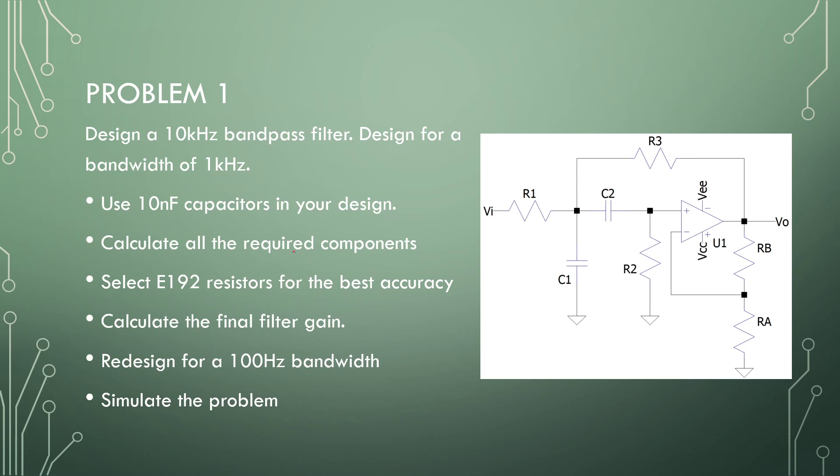So let's do a problem. We want to design a 10 kHz bandpass filter for a bandwidth of 1 kHz, so that is quite a wide band. Use 10 nF capacitors in your design. Calculate all the components. Use E192 resistor values for the best accuracy. If one of these resistors is a bit off, your frequency will be off or your Q-factor will be off by a lot, and it can cause you some issues. Lastly, calculate the final gain of the filter and then redesign for a 100 Hz bandwidth. Simulate the problem.